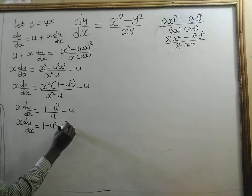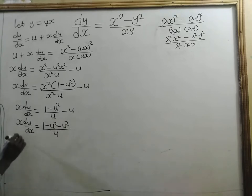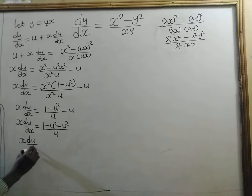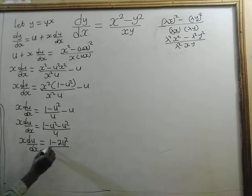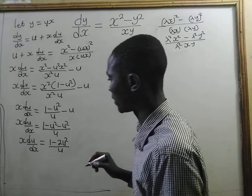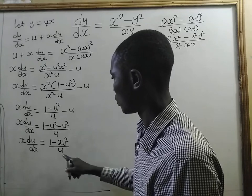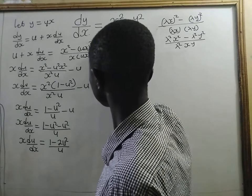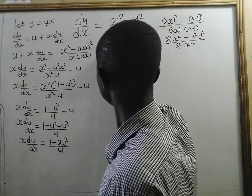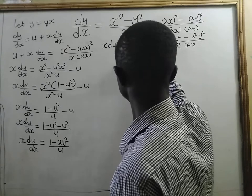We combine terms: the LCM is u, so we have x times u du/dx equals 1 minus u squared over u. We then perform cross multiplication, giving us x du times u equal to 1 minus 2u squared.